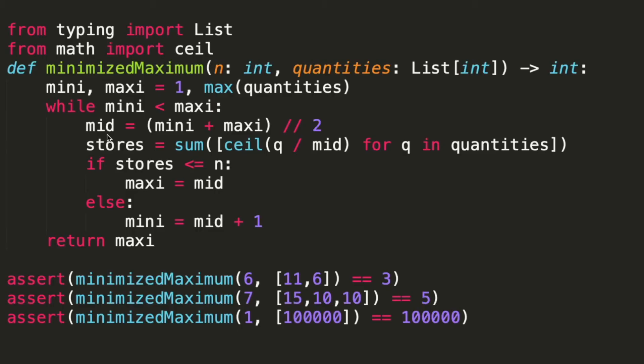Then we start from the middle of this range. For each mid, check how many stores we need at least to distribute all the products. If the number of stores are less or equal to n, means the upper limit is too high. Else means the lower limit is too low. Continue this process until we find the smallest mid.